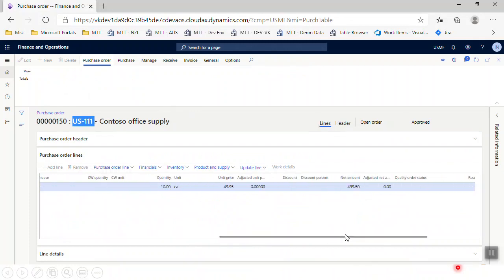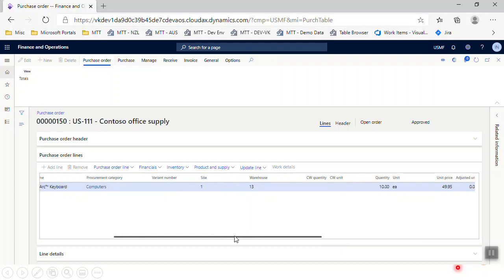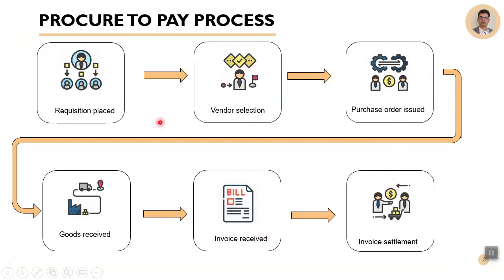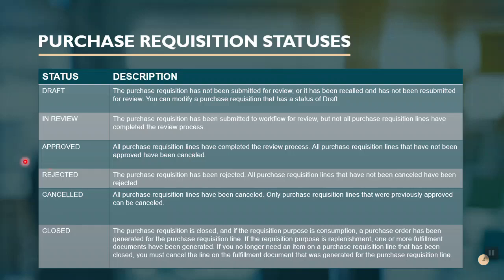We can see the purchase order is created with the vendor selected on the requisition, the item, and the price defined. Before going further, let's go back to the PowerPoint presentation to highlight what we have completed so far: the requisition part, vendor selection, and purchase order issuance. I also want to highlight the different statuses for purchase requisitions — when the status is closed and the requisition purpose is consumption, the purchase order is generated, which is what happened in our case.